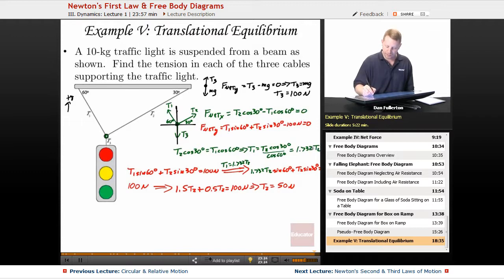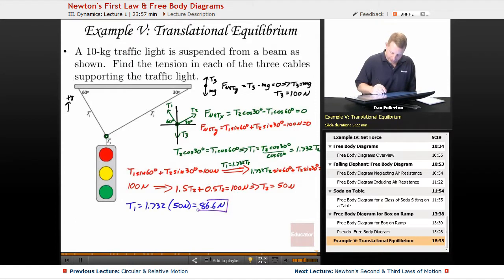I can plug that back into here for T2 to find that T1 is 1.732 T2, which was 50 newtons, or 86.6 newtons. So we found the tensions T1, T2, and T3 in our suspended traffic light. All right, hopefully